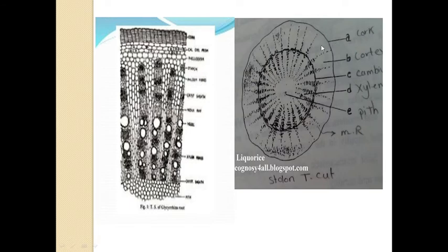This one is known as cork. This one is the cortex portion, cambium. These are the xylem. This one is the xylem portion, pith, and these are the medullary rays. Such type of structure you will find under the microscope.